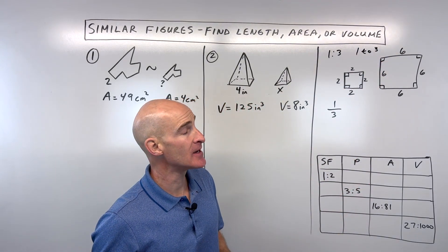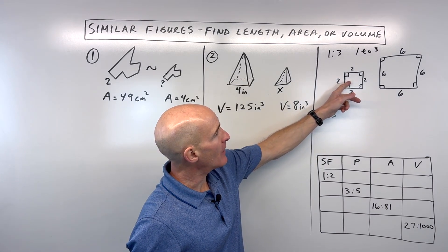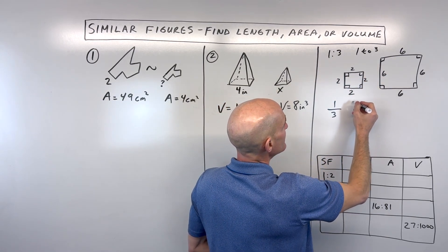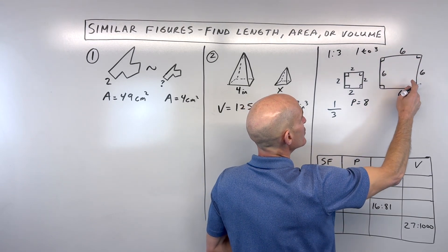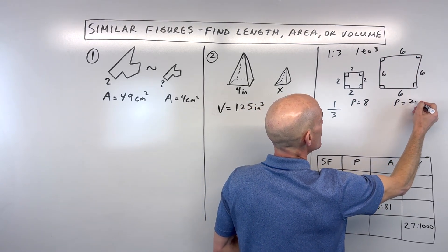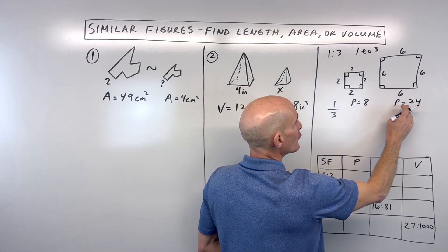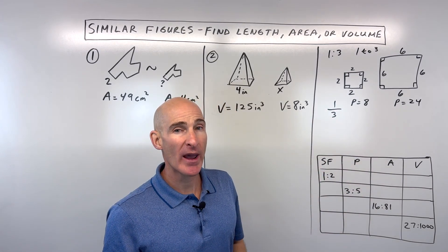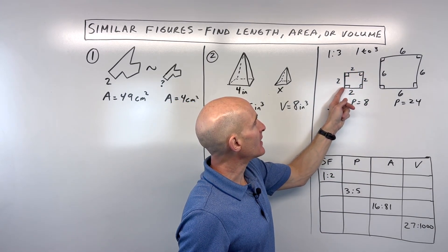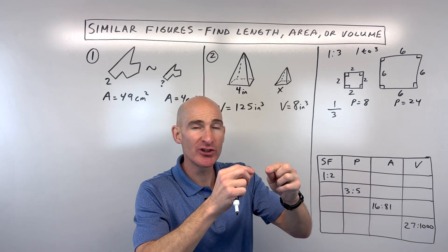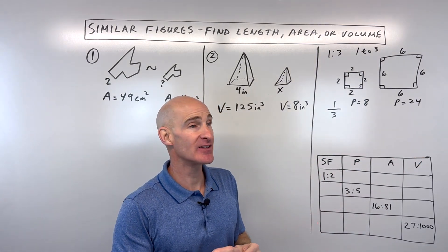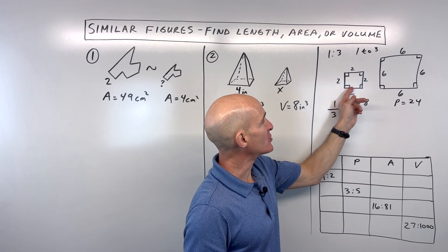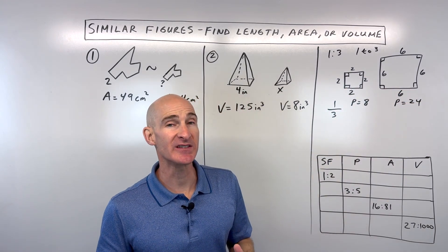If we wanted to find the perimeter of these squares, the perimeter of the smaller is 8, and the perimeter of the larger is 6+6+6+6 = 24. The ratio of the perimeters, 8 over 24, reduces to one to three — the same as the ratio of the sides. The perimeter is one-dimensional, just like the side lengths, so the ratios are equal.